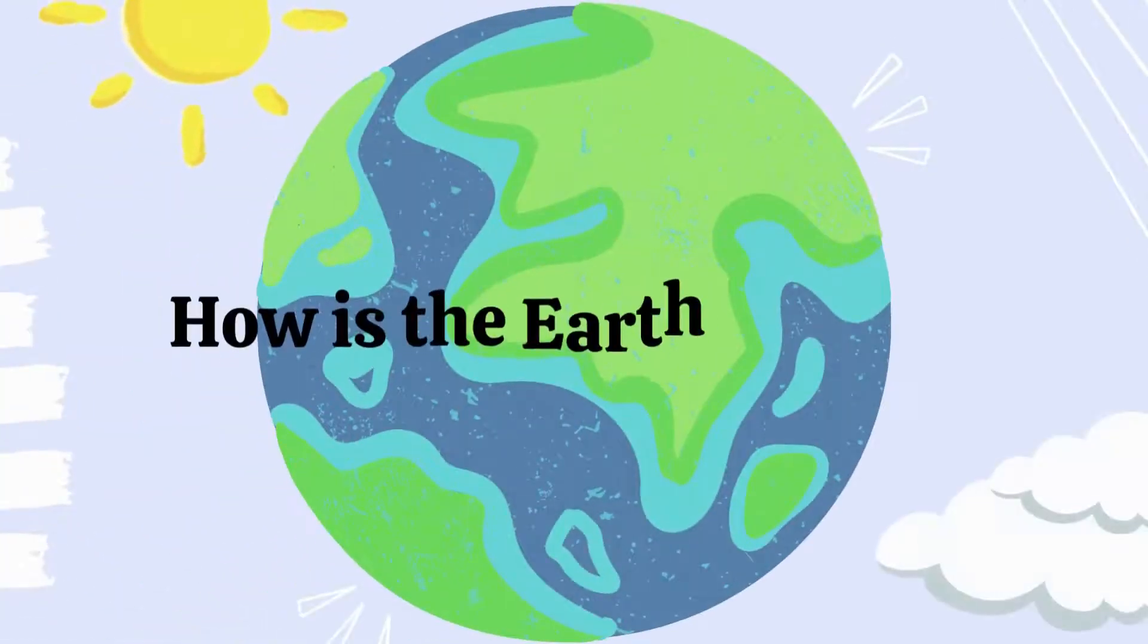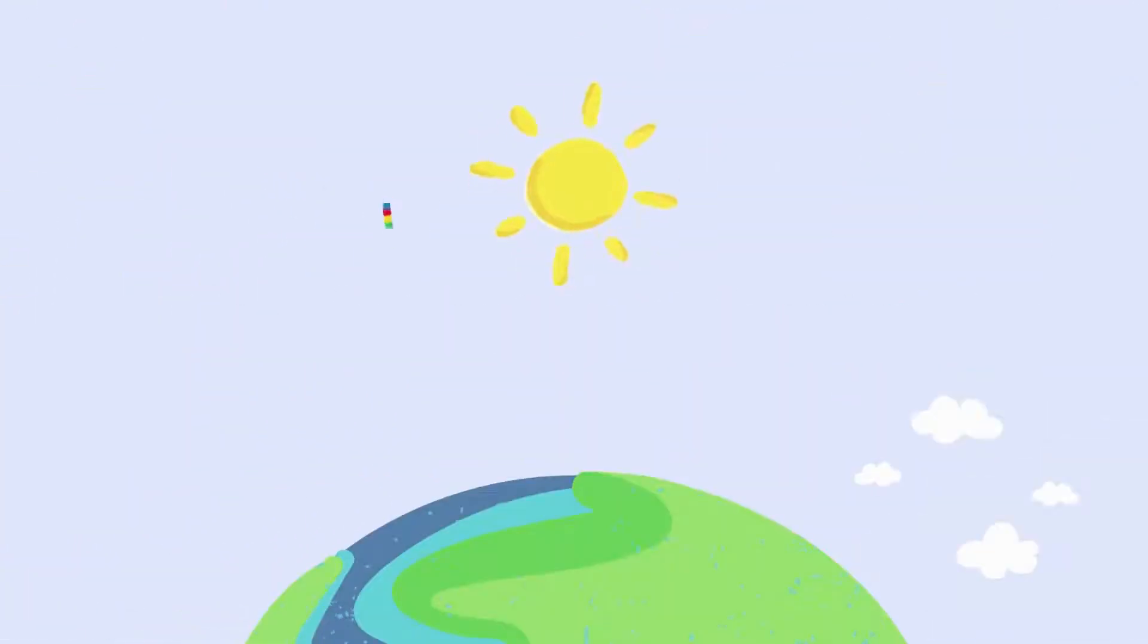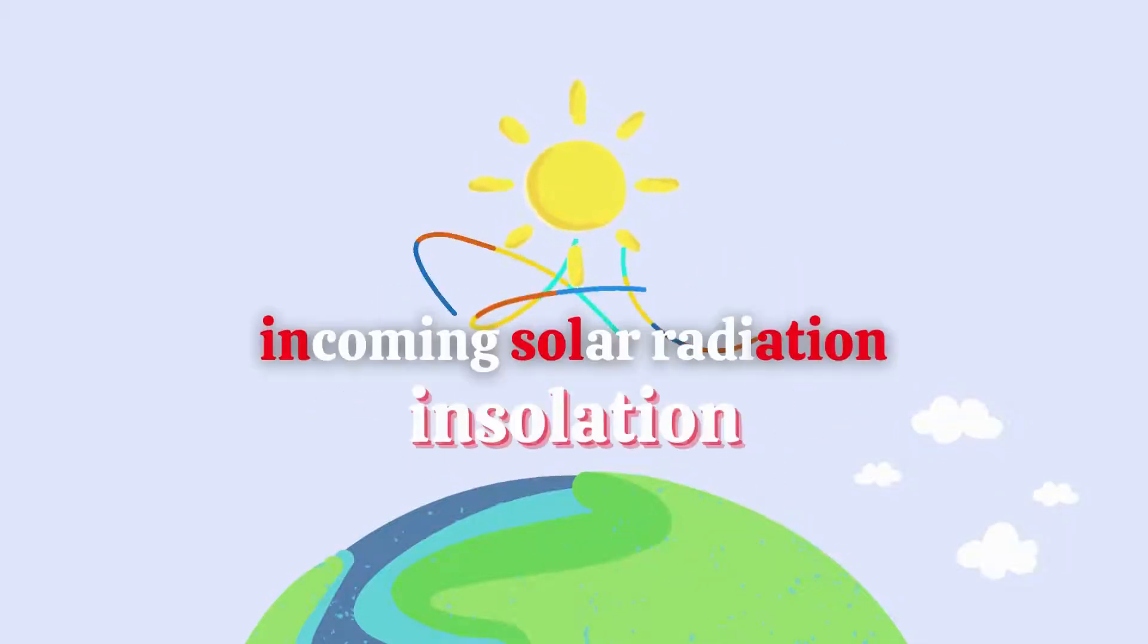How is the earth heated? It all starts with the sun. The sun radiates heat and this heat travels through our atmosphere. We call this incoming solar radiation insolation.